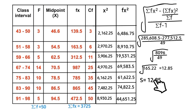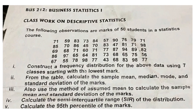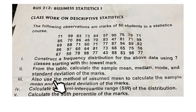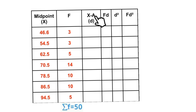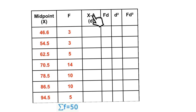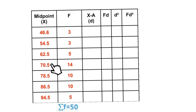We proceed to the next challenge, which says: use the method of assumed mean to calculate the sample mean and standard deviation of the mass. In our table we can see the x − a column. Here, x is each of the midpoint values, and a is the assumed mean, meaning we have to assume any of these values to be the mean.